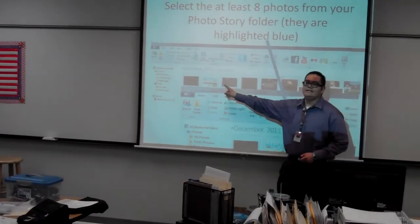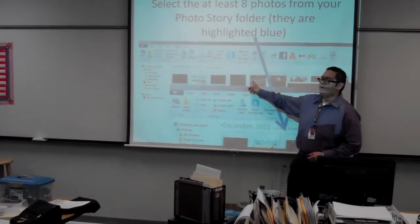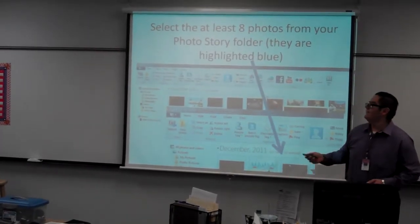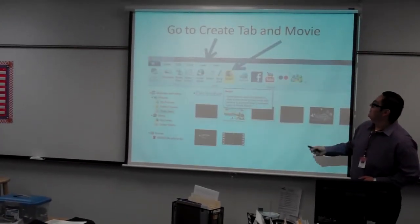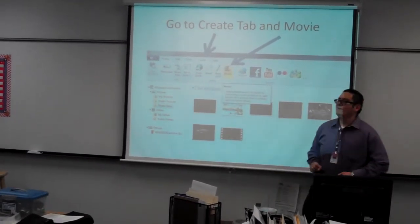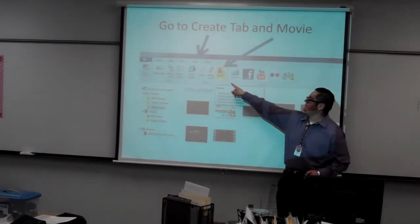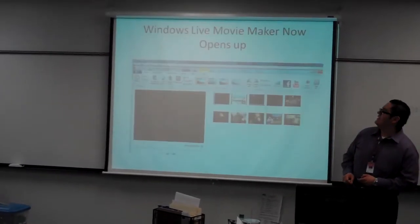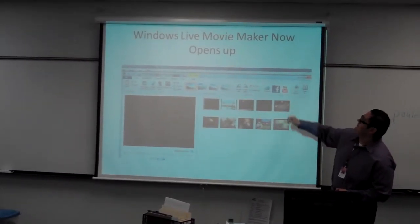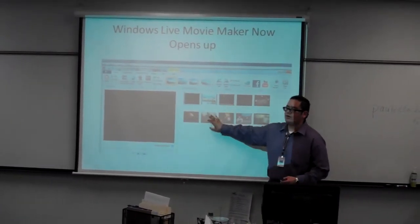Afterwards, you're going to select the photos you want to add — pick all eight that you need. Once you've selected the eight, you're going to click on the create tab, then click movie. That's going to take you to Windows Live Movie Maker, which will open up with all your photos already in there.